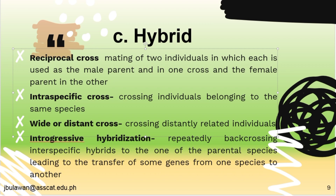The intraspecific cross is the crossing of individuals belonging to the same species. Next is the wide or distant cross, which is the crossing of distantly related individuals. Introgressive hybridization is the repeated backcrossing of interspecific hybrids to one of the parental species, leading to the transfer of some genes from one species to another.